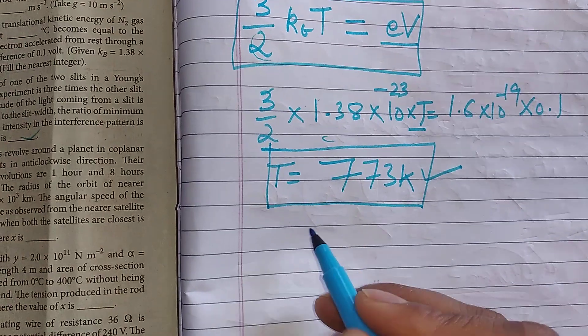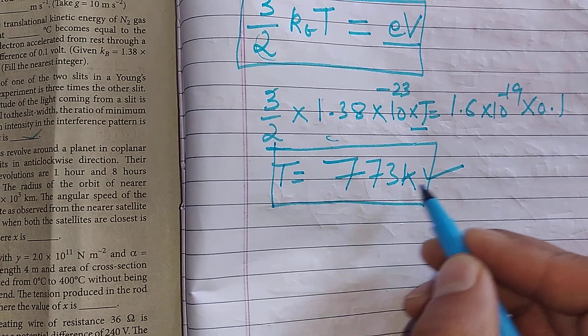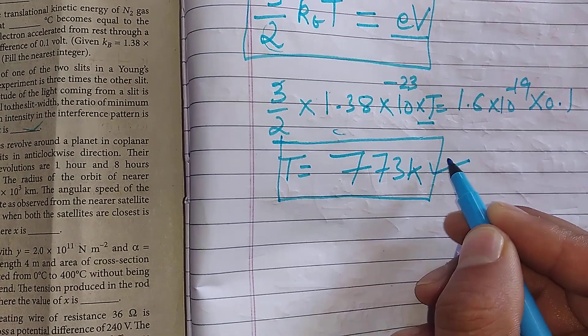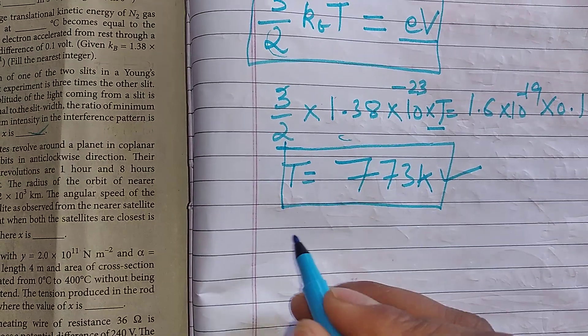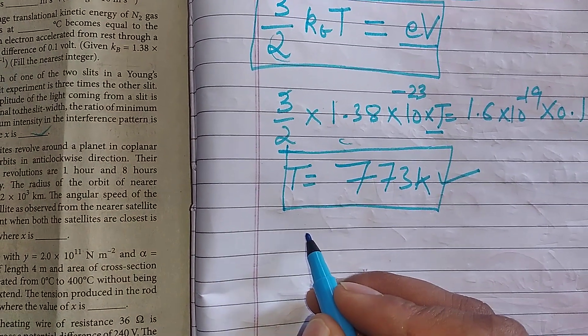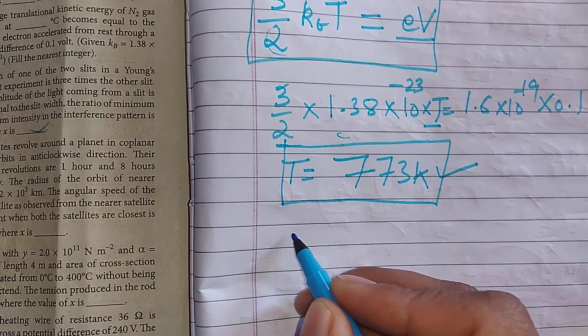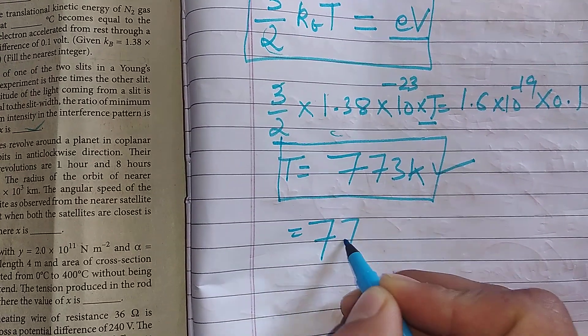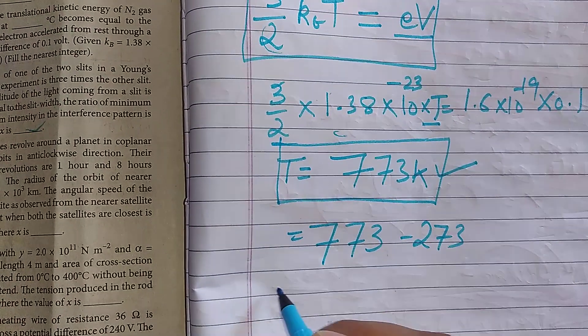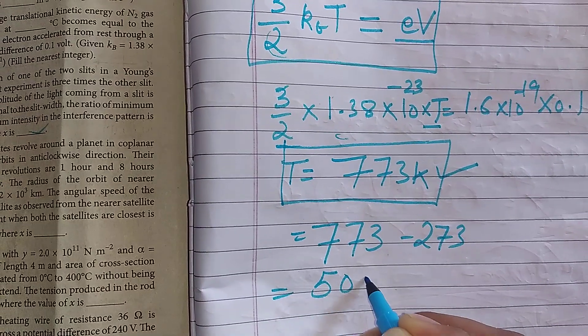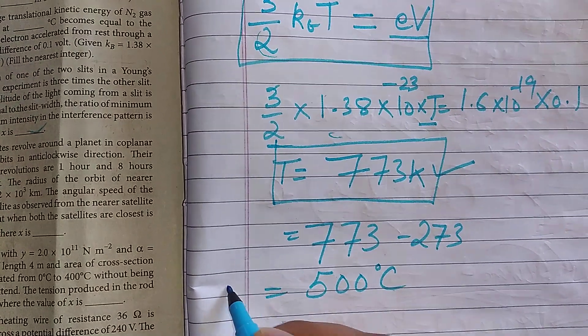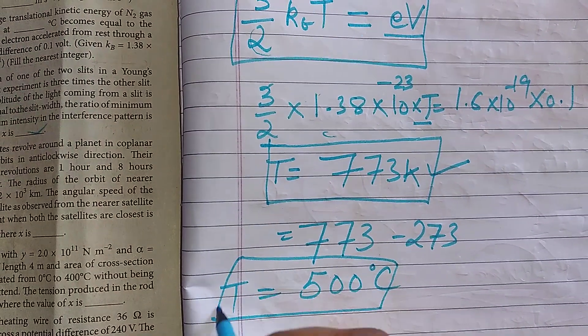So you have absolute scale terms in terms of temperature. That is 773 Kelvin. But when we have integer type question, we have asked in centigrade. So we will convert it in centigrade like 773 minus 273. So the answer of this question will be 500 degree centigrade. So temperature is equal to 500 degree centigrade.